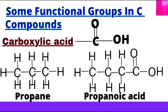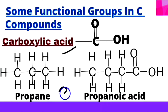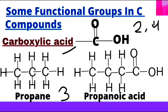Now let's talk about functional groups in detail. The first functional group is COOH, which is called the carboxylic acid group. Here is propane as an example. Propane has three carbon atoms. Carbon's electronic configuration is 2, 4, so the outermost shell has 4 electrons, and carbon forms 4 covalent bonds to gain stability.